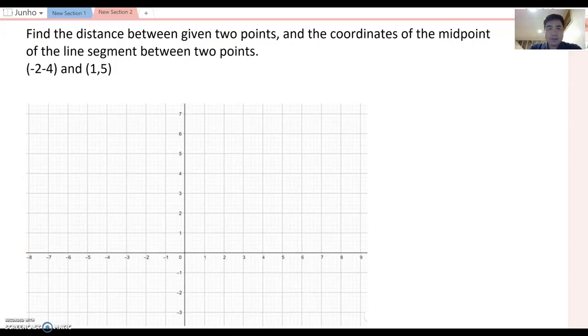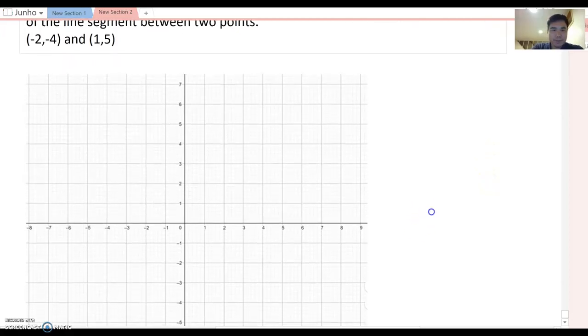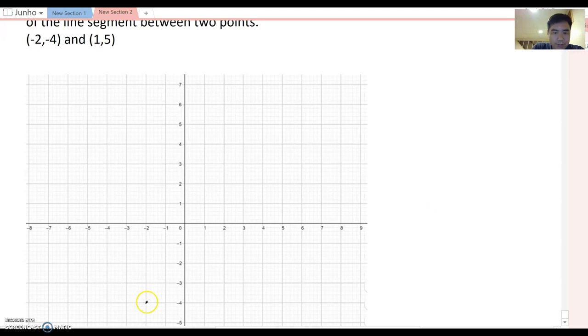So as you see, there are two points given: (-2, -4) and (1, 5). The first step I want to plot those two points on the plane graph. So as you see, (-2, -4) will be here, and (1, 5) is right here.